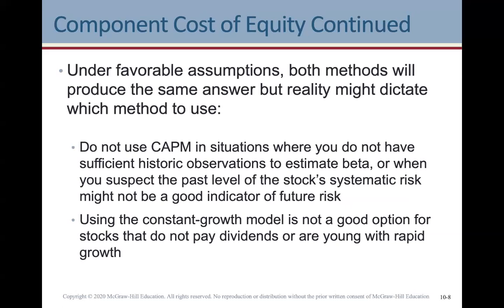With favorable assumptions both methods will produce the same answer, but reality might dictate which method to use. Do not use CAPM in situations where you don't have sufficient historical observations to estimate beta reliably, or when you suspect that the past level of the stock's systematic risk might not be a good indicator of future risk — for example, if there have been significant changes to the company that substantially adjust its risk variables.